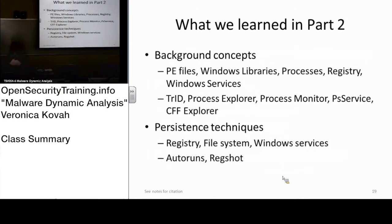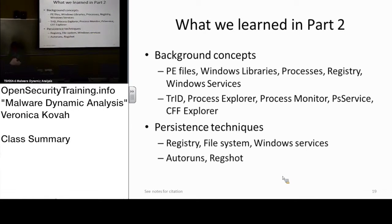And after that, part two — we learned about persistence techniques. But before that, we covered a bunch of background information: how to check the file type. We used TRID to identify a file type, and we learned about DLL and Windows libraries. We actually used Process Explorer to check what kind of DLLs have been loaded into Internet Explorer or Explorer — there were a lot of DLLs loaded. And how about processes? We used Process Monitor and Process Explorer — same idea but not exactly the same thing. To observe the registry keys, we used Regedit.